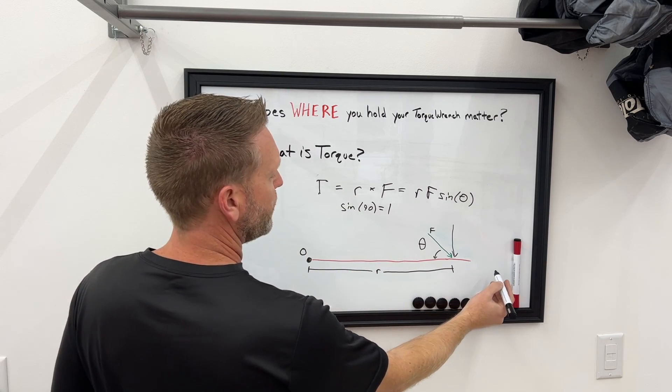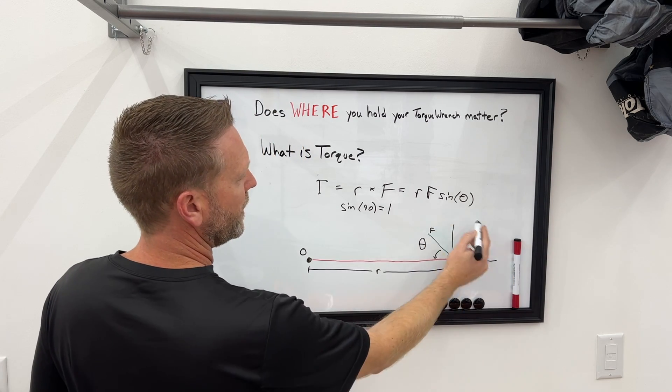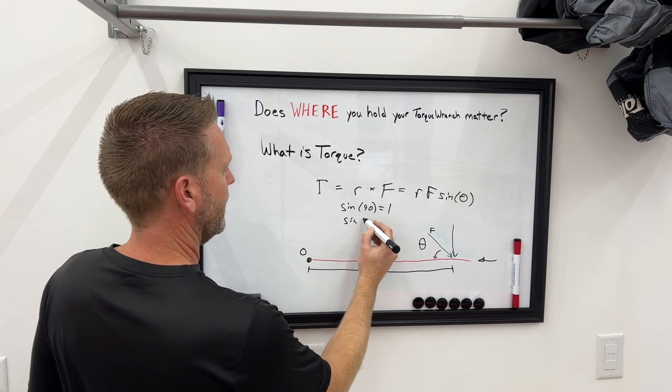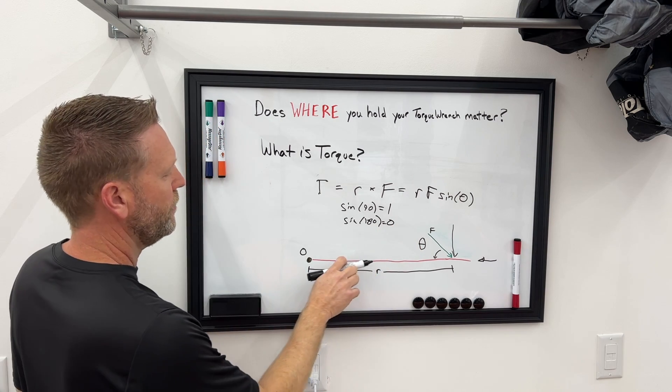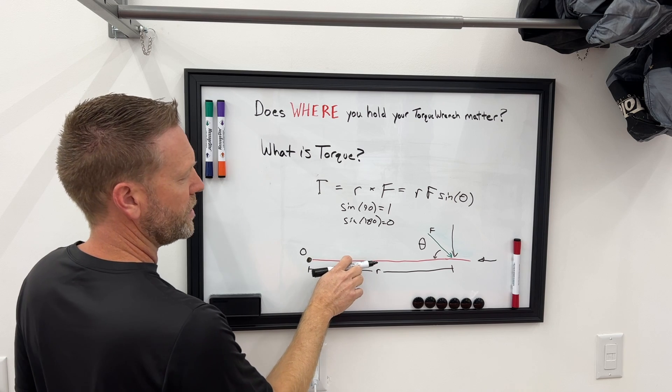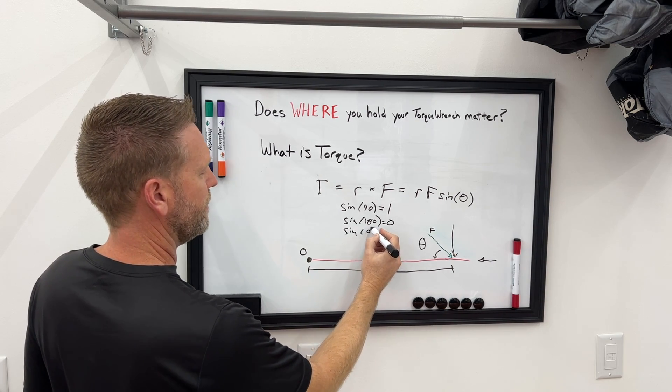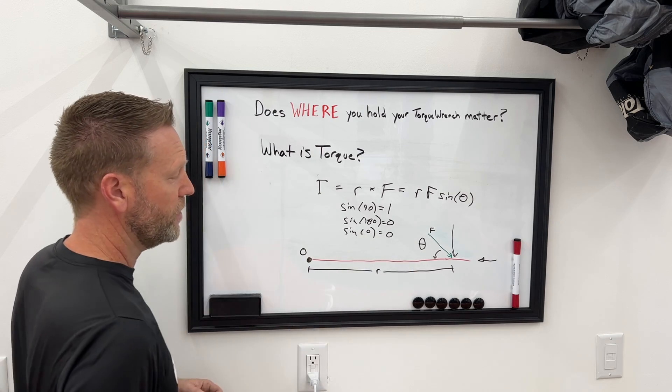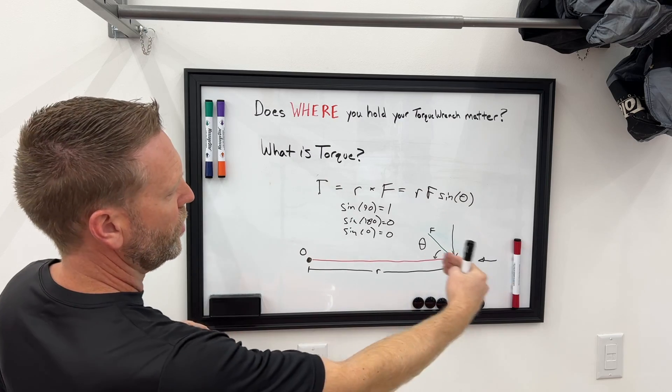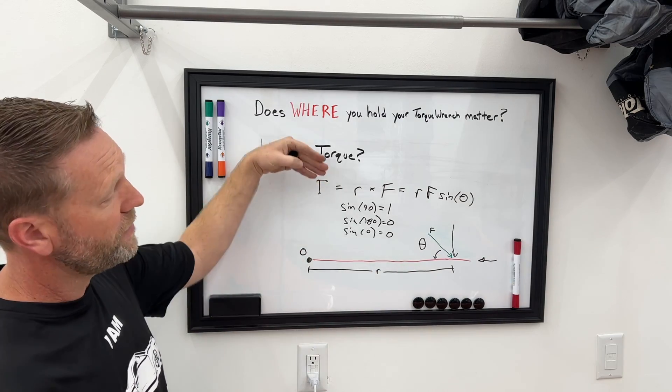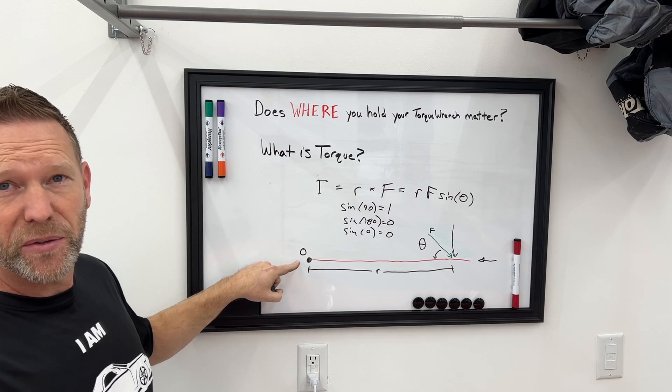So it makes sense because if you think about if you were to apply force directly this way, that would be 180 degrees, and the sine of 180 degrees is zero. If you were to apply force in this direction, there is going to be no angle. So again, the sine of zero is also zero. So no torque would be applied. So if you're applying force this way or this way, that's not going to rotate.